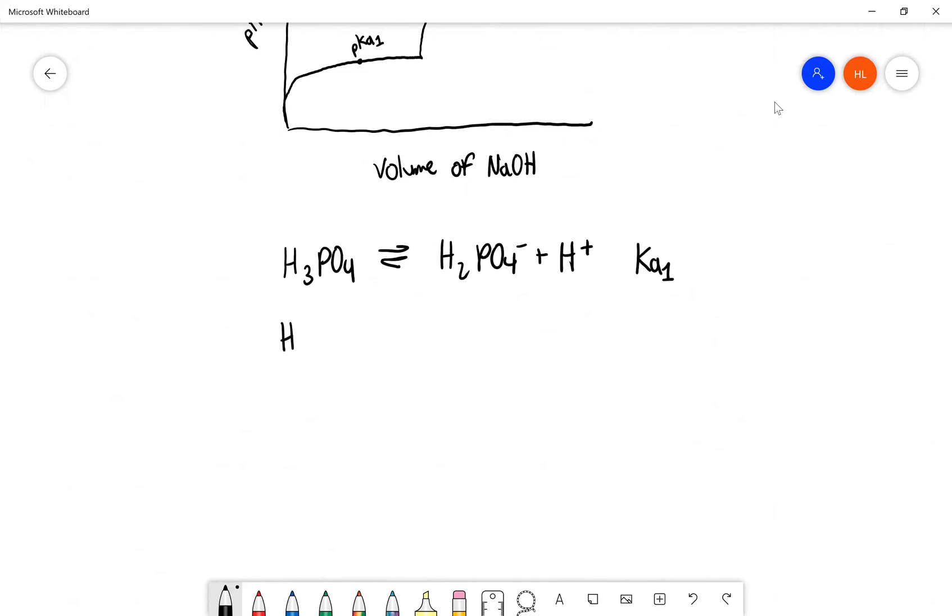And we have H2PO4 minus goes to HPO4 2- plus H+, this would be the Ka of two.